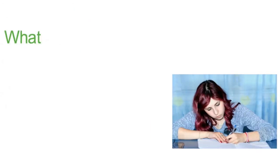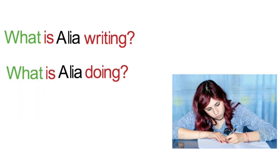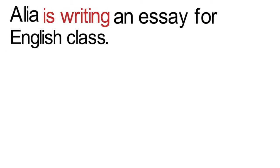We could also ask, what is Alia writing? Or, what is Alia doing? In these questions, the subject Alia goes between the verb to be and the main verb. The answer would therefore be, she is writing an essay for English class. Or, Alia is writing an essay for English class. They both mean the same.